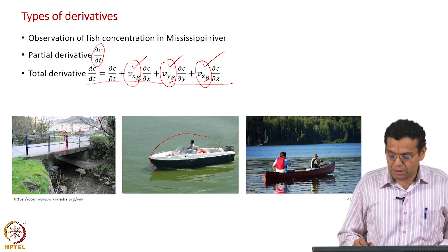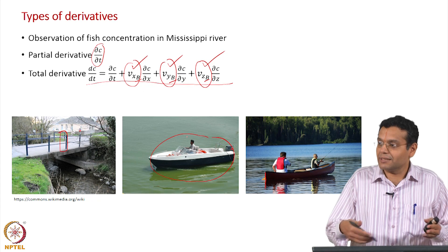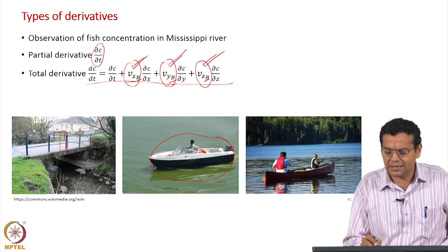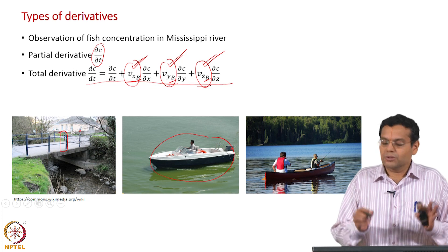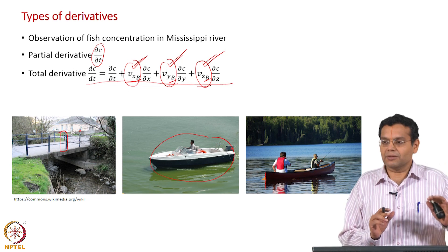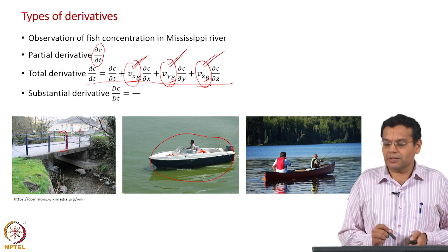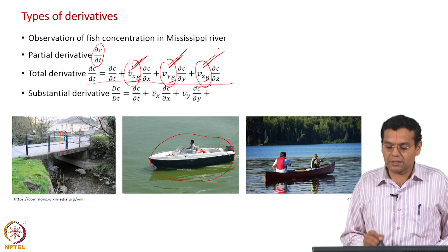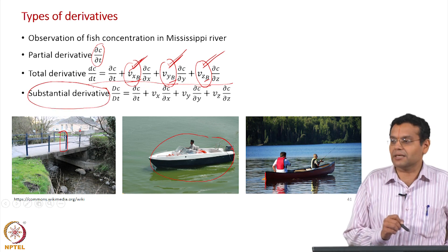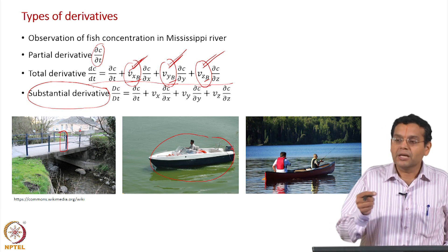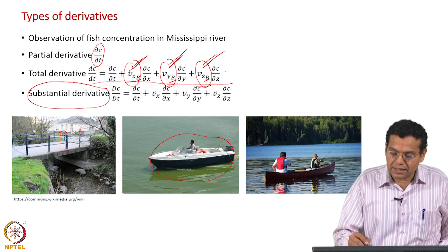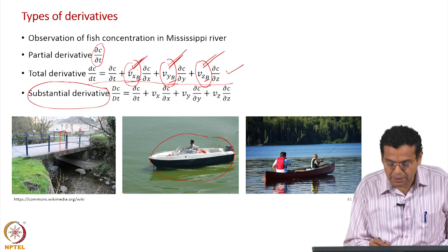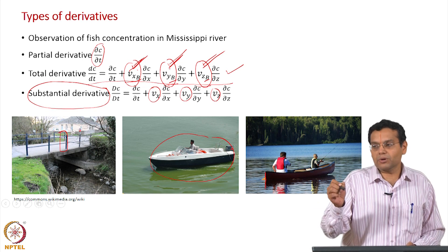In the second case, you go in a motorboat that has its own velocity with its own x, y, z components of velocity — these are not necessarily the same as the fluid velocity. So the total derivative is a more generic form; a special case of that is the substantial derivative, where the velocities are the same as the fluid velocities. I want to distinguish this because throughout the course we will come across the substantial derivative, which involves following the fluid motion.